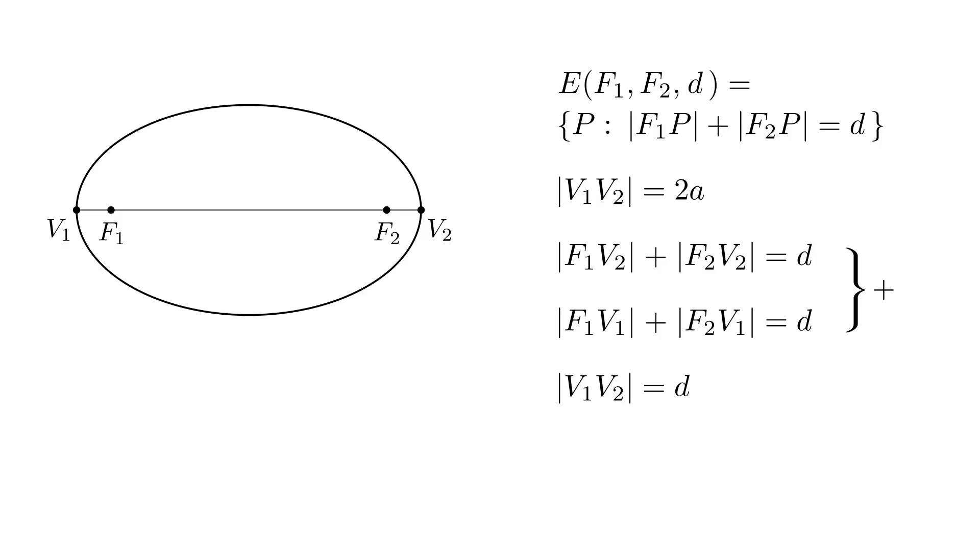But d was the length of our string, so the distance between vertices is equal to the length of the string. We also had that V1V2 equals 2a, which means that d equals 2a. We'll substitute 2a instead of d in the definition, and that way we get the definition of an ellipse which we'll use in the future.